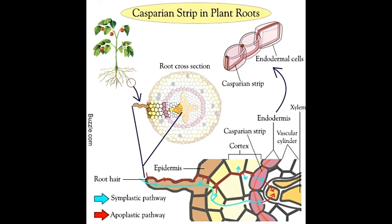The Kasparian strip also creates a barrier to harmful chemicals like herbicides, which cannot pass through it. Without this strip, such chemicals would spread throughout the plant via the xylem, killing it. It also prevents harmful microbes from gaining entry into the plant and causing infections. In conclusion, the Kasparian strip is a thickening in parts of the endodermal cell wall that helps regulate the absorption of water and nutrients from the soil, and plays an active role in the defense of the plant.